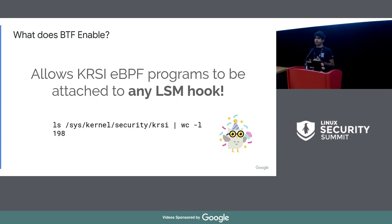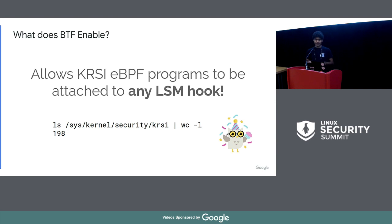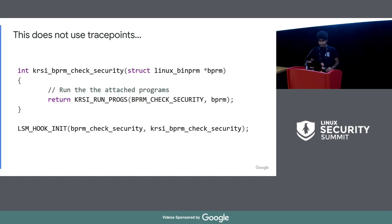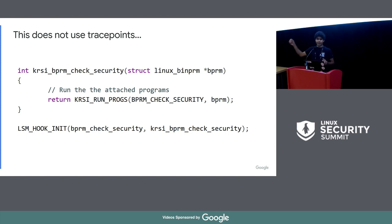This has enabled us — last time I gave the talk we just had one execution hook — now you can attach eBPF programs to any LSM hook. I quickly counted and we have 198 hooks you can attach eBPF programs to, which is a good balance between tracing and security. I want to make this very clear: this does not use trace points or trampolines. We want this to be a proper LSM, just using eBPF as a mechanism to extend the LSM framework. There is a hook called KRSI_bprm_check_security which takes the argument, runs the eBPF programs, and is registered as a proper LSM hook.